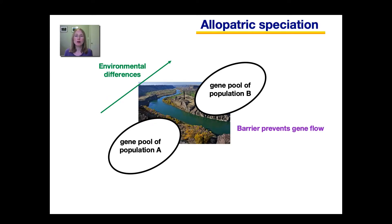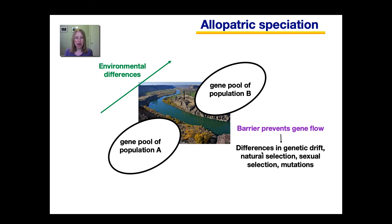Over a long period of time, a geographic barrier may arise that separates this population into two. Over time, a river may form, or a canyon, or a new mountain range. This barrier now prevents gene flow between the two populations, so individuals from population A can no longer mate with individuals from population B. Over a period of time, you may start to get differences in genetic drift, differences in natural selection, sexual selection, and different mutations on the two sides of the geographic barrier.